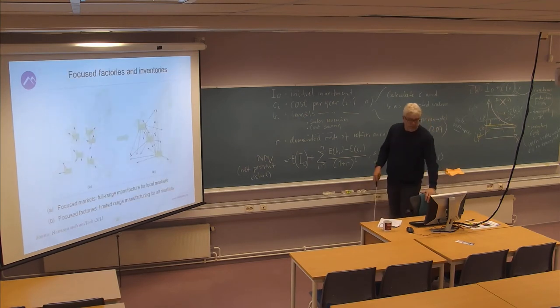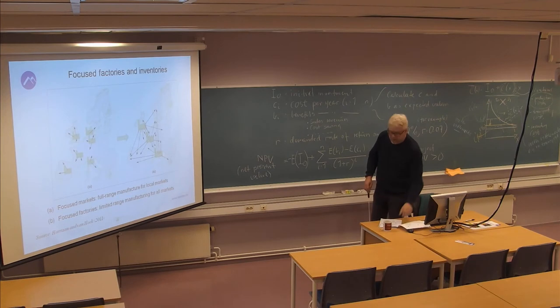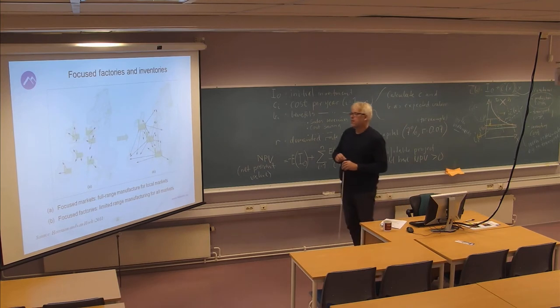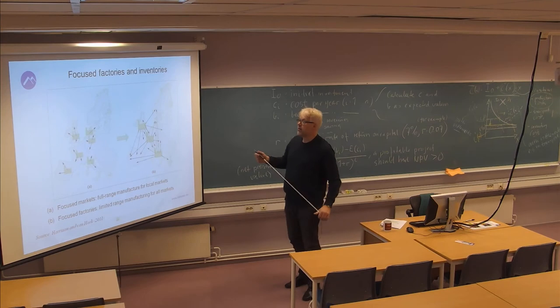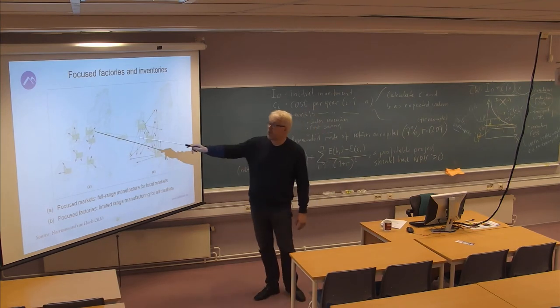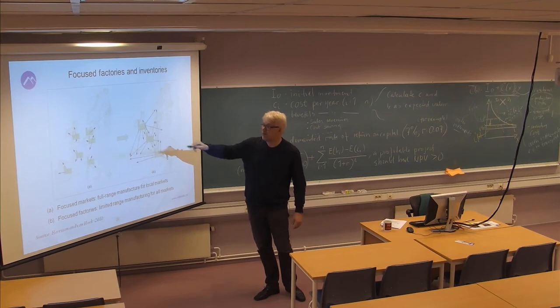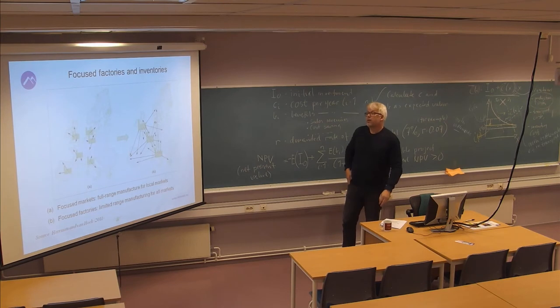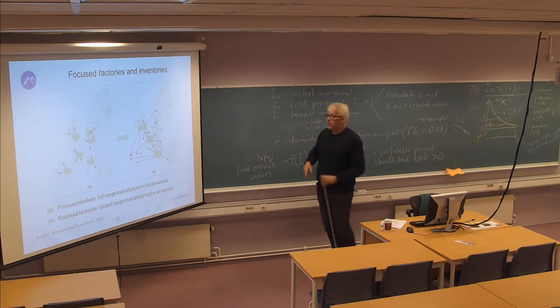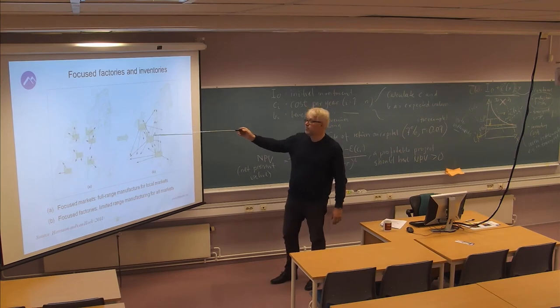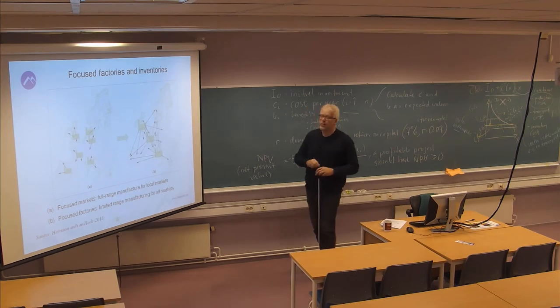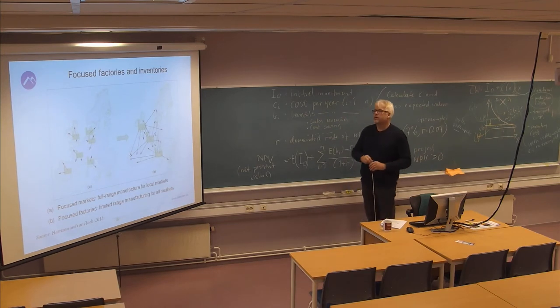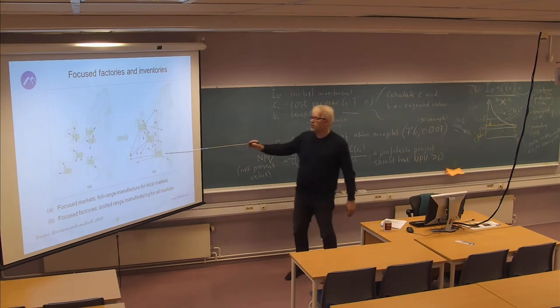This is how it looks like in a very graphical sense. This is European conditions, where you can see a development from a more decentralized structure with full product range for local or national markets. And then this picture where you have factories with a limited scope in terms of number of products, but where you can distribute to a larger market.